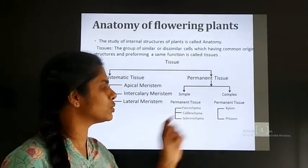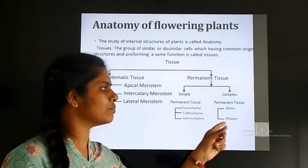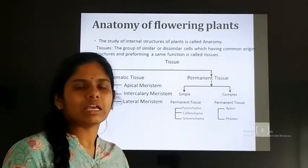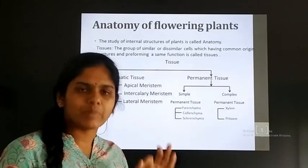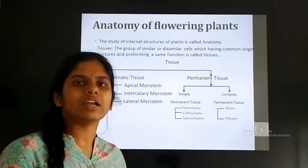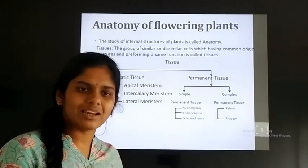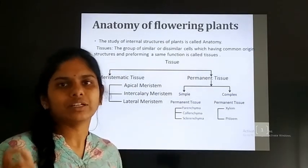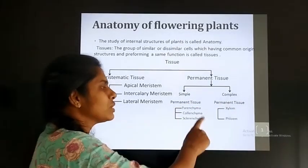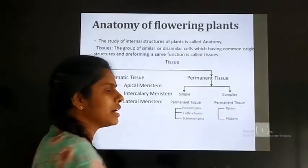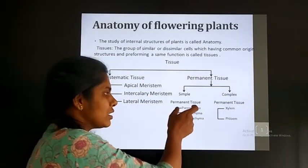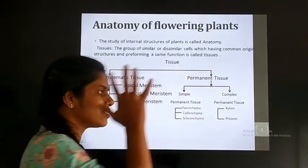Complex permanent tissue is of two types: xylem and phloem. Permanent tissue is a mature, differentiated cell which has lost the capacity to divide. It is of two types — simple and complex permanent tissue. Simple is of three types: parenchyma, collenchyma, and sclerenchyma.